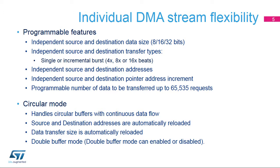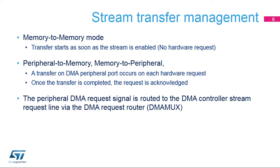The source and destination addresses and pointer increment are also independently configurable. The transfer data size can be pre-programmed up to 65,535. Circular buffer mode is available to support a continuous flow of data; the source and destination addresses and the number of data items to be transferred are automatically reloaded after the complete transfer. Double buffer mode allows the switching between two memory buffers to be managed by hardware. Memory-to-memory mode allows transfers from one address location to another without a hardware request — once the stream is configured and enabled, the transfer starts immediately.